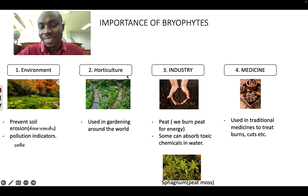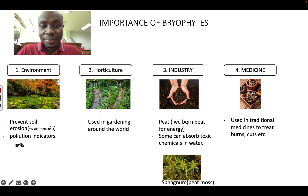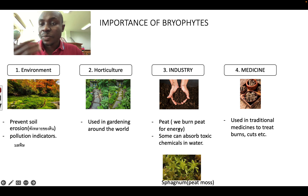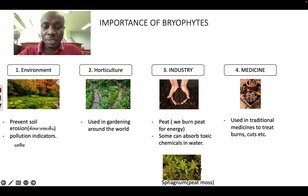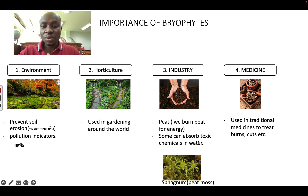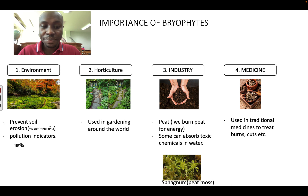Number two is horticulture — they are used in gardening all around the world. Number three, industry: some of these mosses are used as peat, and we burn peat for energy, just like we burn wood, but peat is even better than wood. The mosses usually used for peat are called sphagnum, or peat moss. They can also absorb toxic chemicals in water, cleaning it from oil and other detergents. Number four, they are used in traditional medicine to treat cuts and burns.